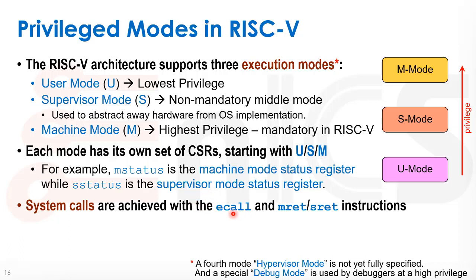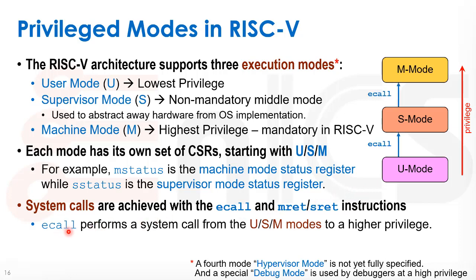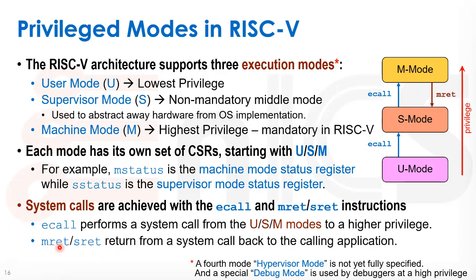In RISC-V, system calls are implemented using the ecall instruction and the mret and sret instructions. The ecall instruction is how we provide a system call — it's like a call instruction but special because it changes the privilege mode. The ecall can jump from user mode to supervisor mode, or from supervisor mode to machine mode, allowing us to reach a higher privilege level. Once there we run our system call, and to return we use the mret instruction to return from machine mode to supervisor mode, or the sret instruction to return from supervisor mode to user mode.